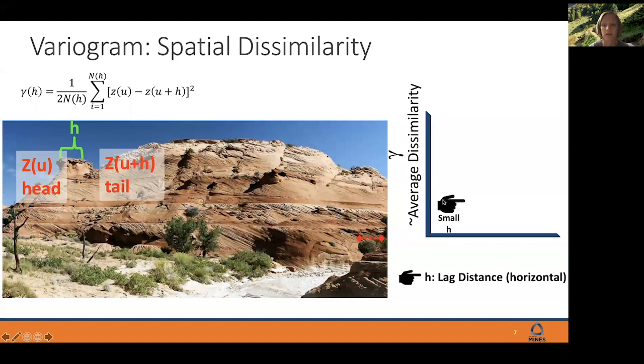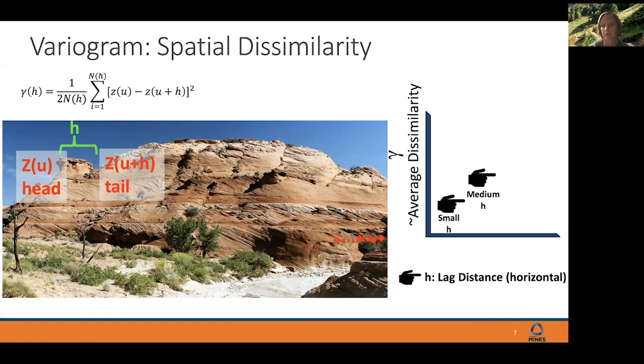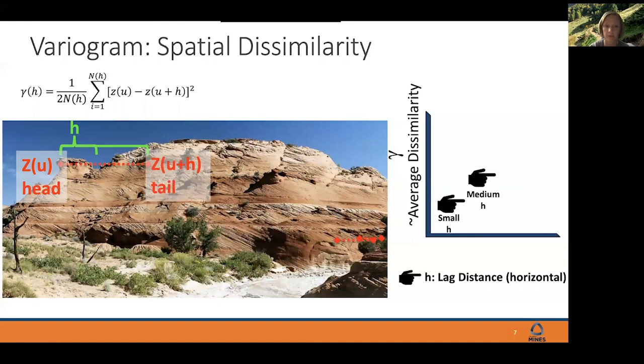We're going to scan through all the possible data that we have with this little stencil. We somewhat do an average, one over N times two, to do the average of that squared difference between those data points. This is what's plotted then here on the lower right. At this small distance H, I've plotted what is that average spatial dissimilarity, where I'm only looking horizontally. We can imagine making that H distance bigger.